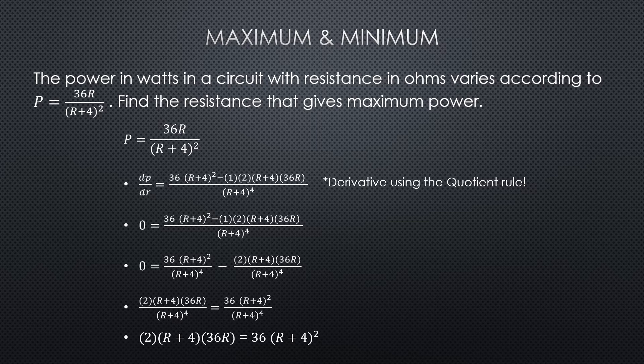Now the second bullet point, we're setting all of that equal to zero, and then from that point on we're just doing algebra to simplify and work on solving for R.